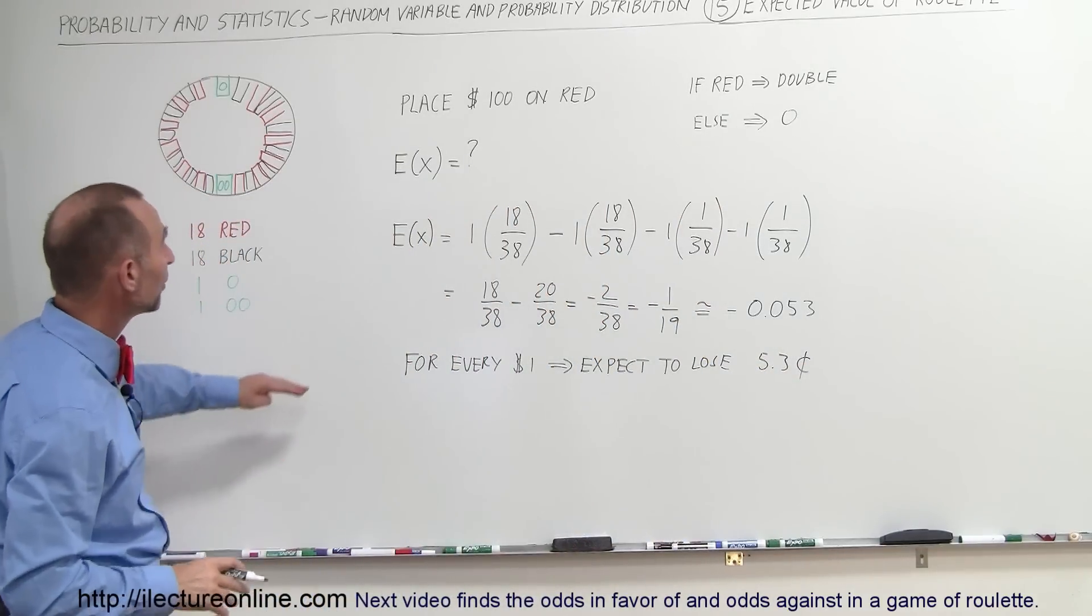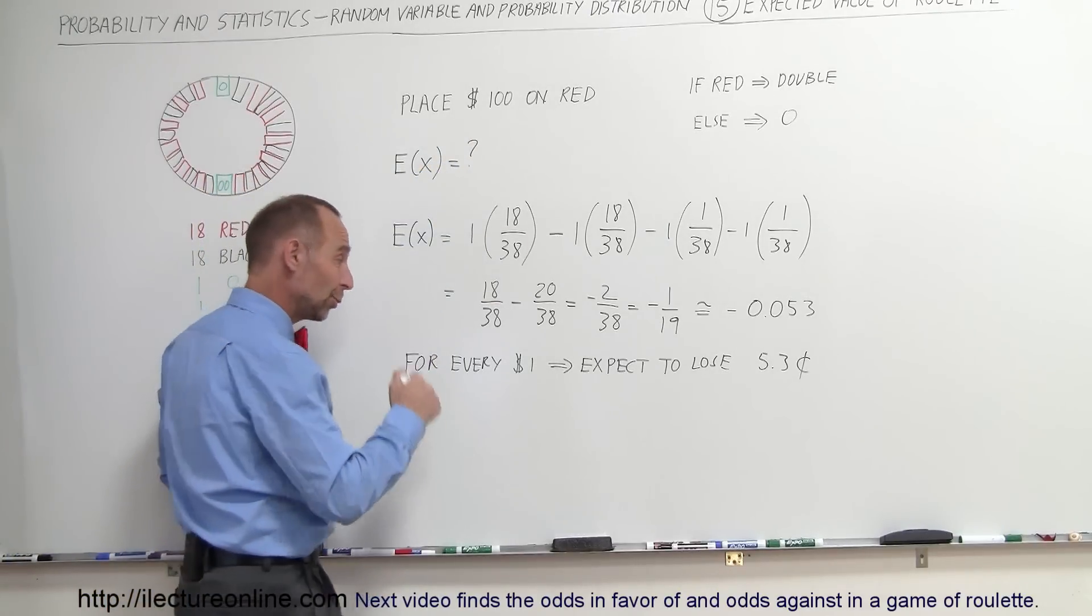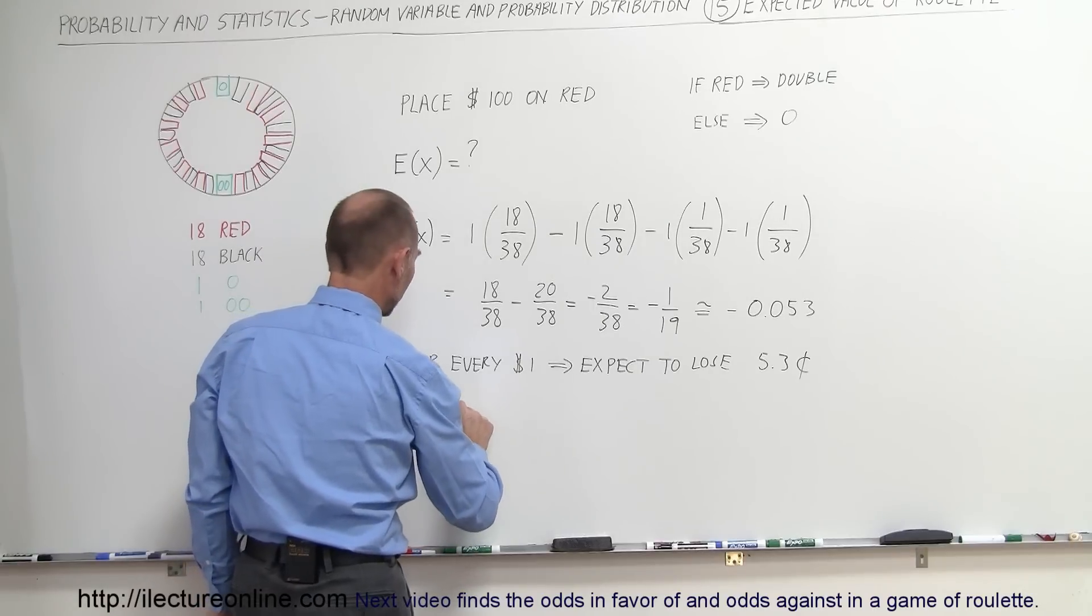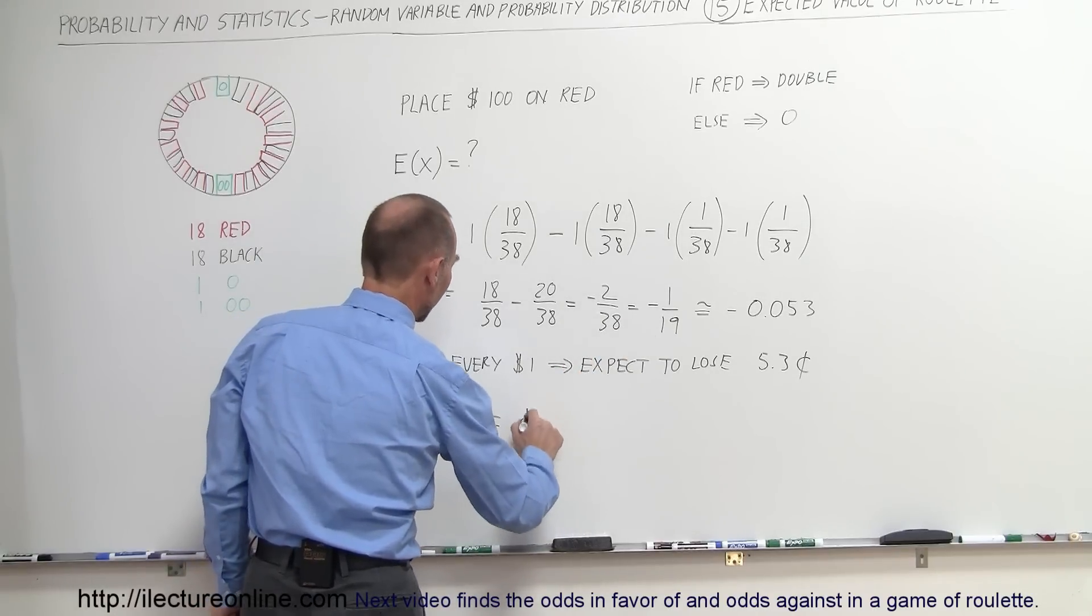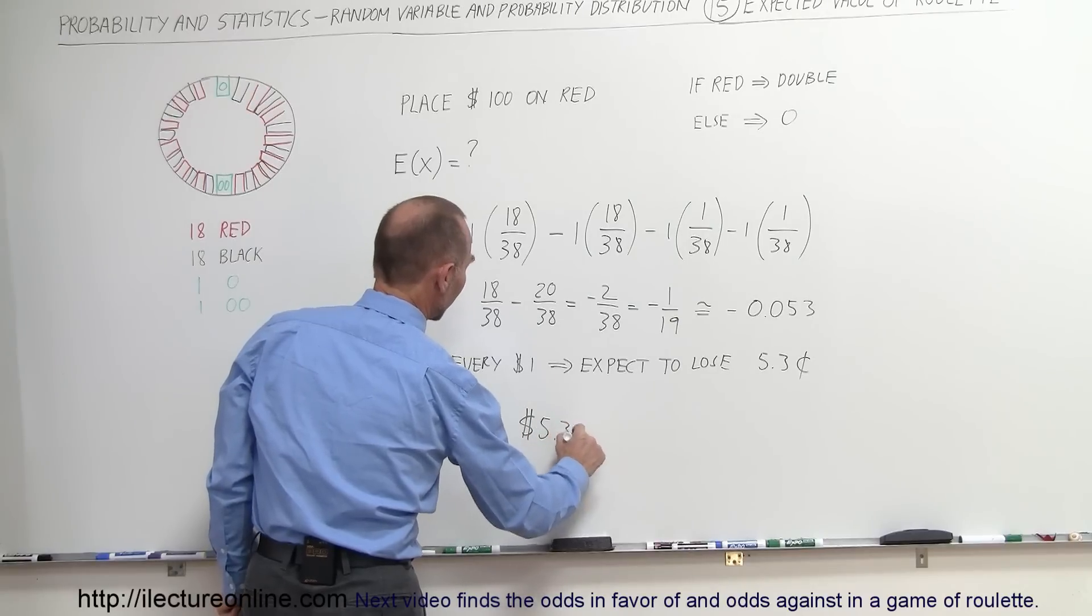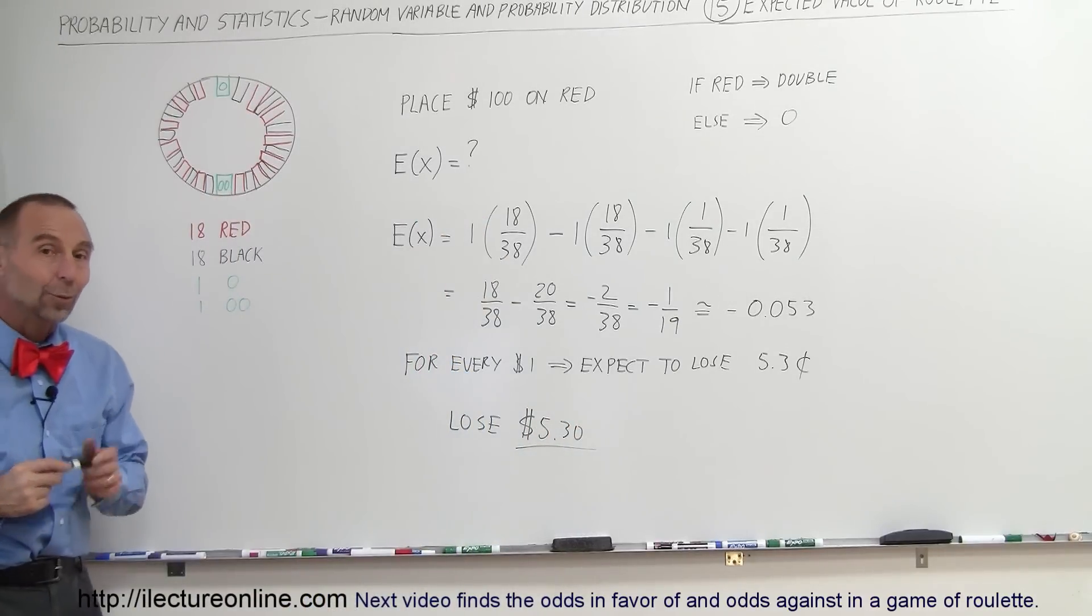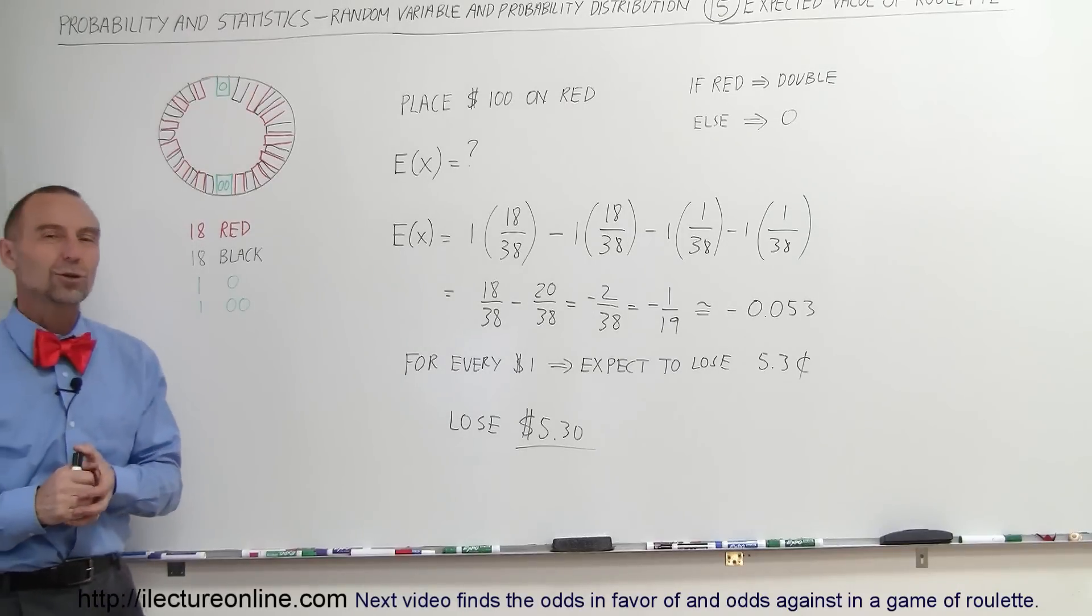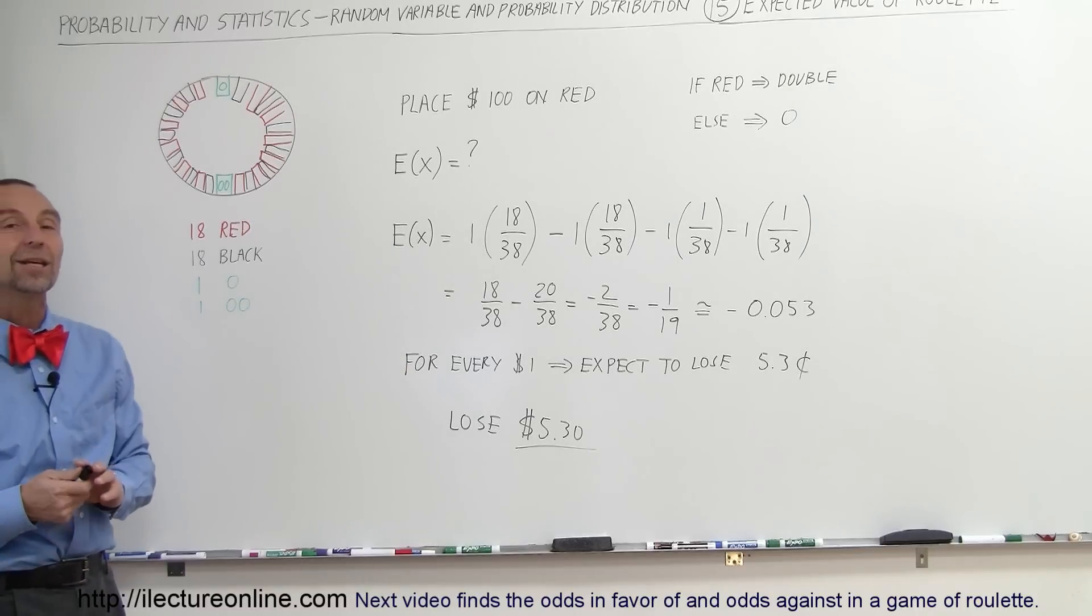So what's going to happen when you put a hundred dollars down, what is the expectation? Every time you turn the wheel on the roulette then you put a hundred dollars on red every time, you expect to lose, so you multiply that times 100, 5 dollars and 30 cents every time you place a hundred dollar bet on either red or black, it doesn't matter. So probably not a good thing to do because if you keep doing it, you're going to lose a lot of money over the long term.